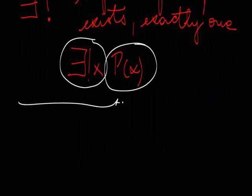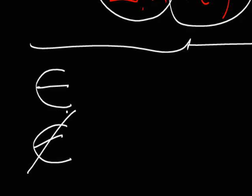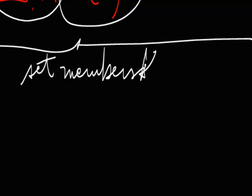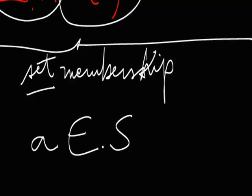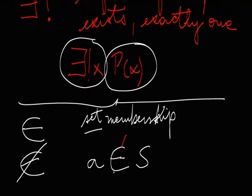Now this symbol should not be confused with another symbol that looks similar, which is set membership. The negation of this is the non-membership. So this is set membership. Basically one situation where you would use something like this is to say that the element a is a member of the set s, or is an element of the set s. Or if you cross this, that a is not an element of the set s.